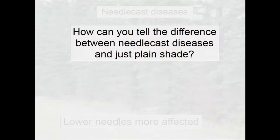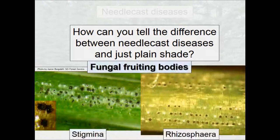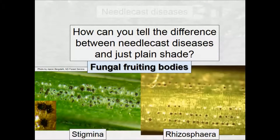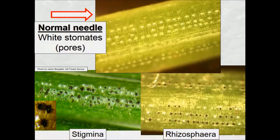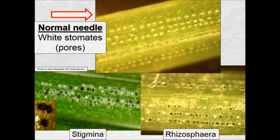How can you tell the difference between a needle cast disease and simple shading? As trees grow bigger, older interior needles get shaded out — the tree naturally lets them go. You tell the difference by fungal fruiting bodies on the needles. These close-up photos show little dark dots — fungal fruiting bodies. On the right is Rhizosphaera; on the left is Stigmina. Normal stomates (the little pores in needles) should be white; when they're black, those are the fungal fruiting bodies. That's how you distinguish disease from natural shading.